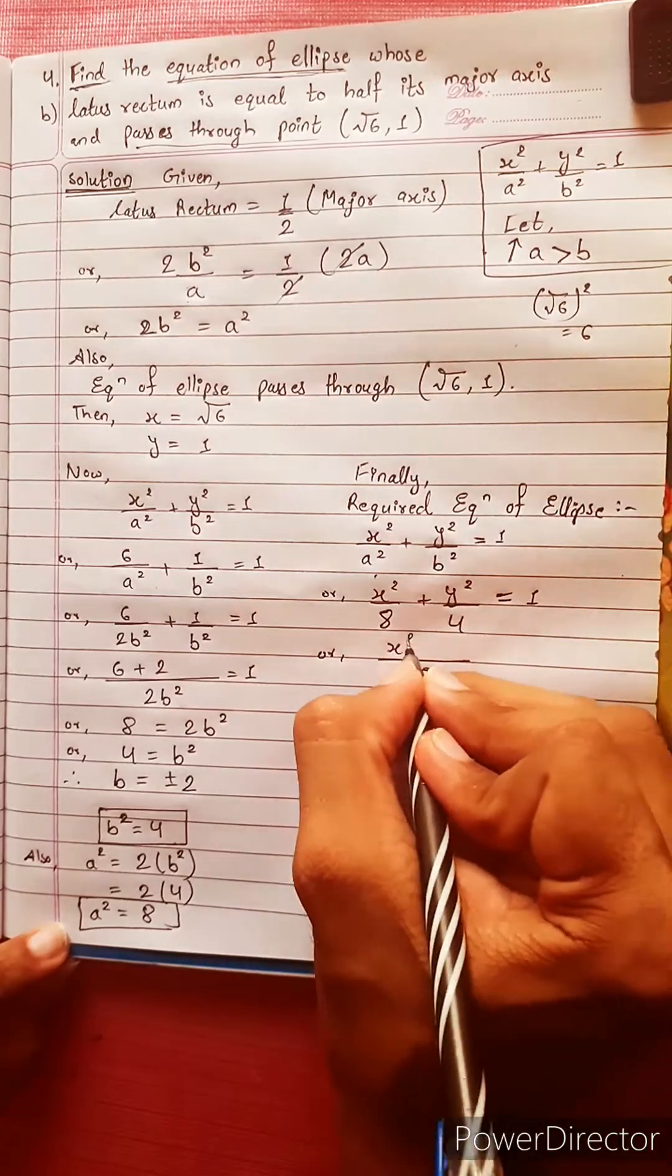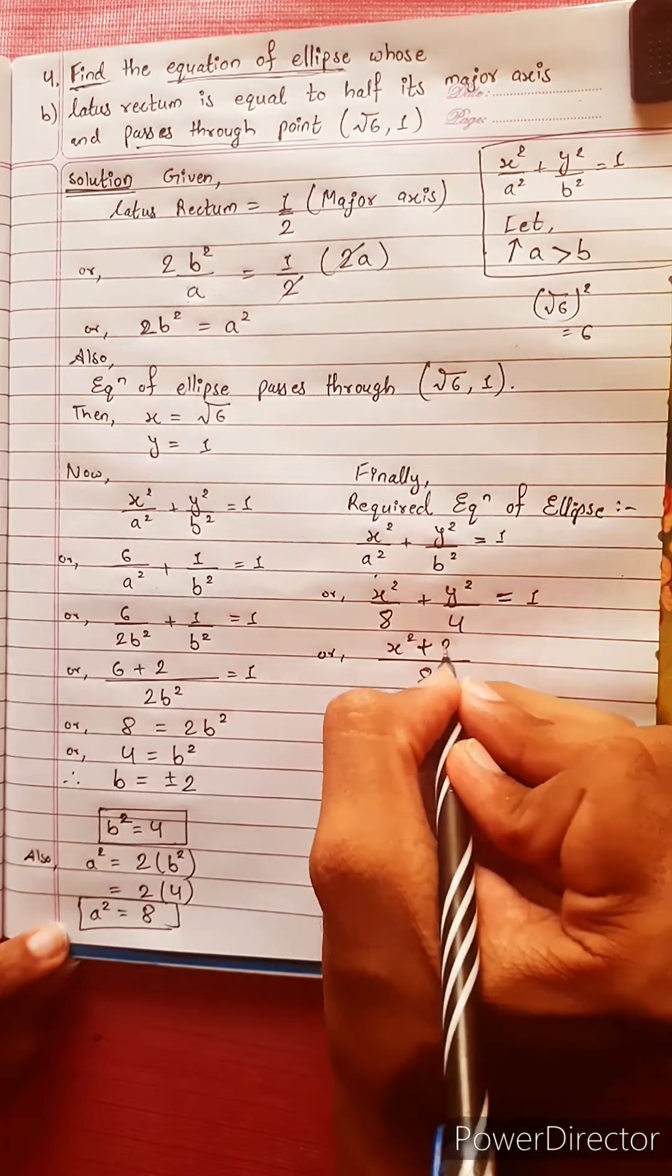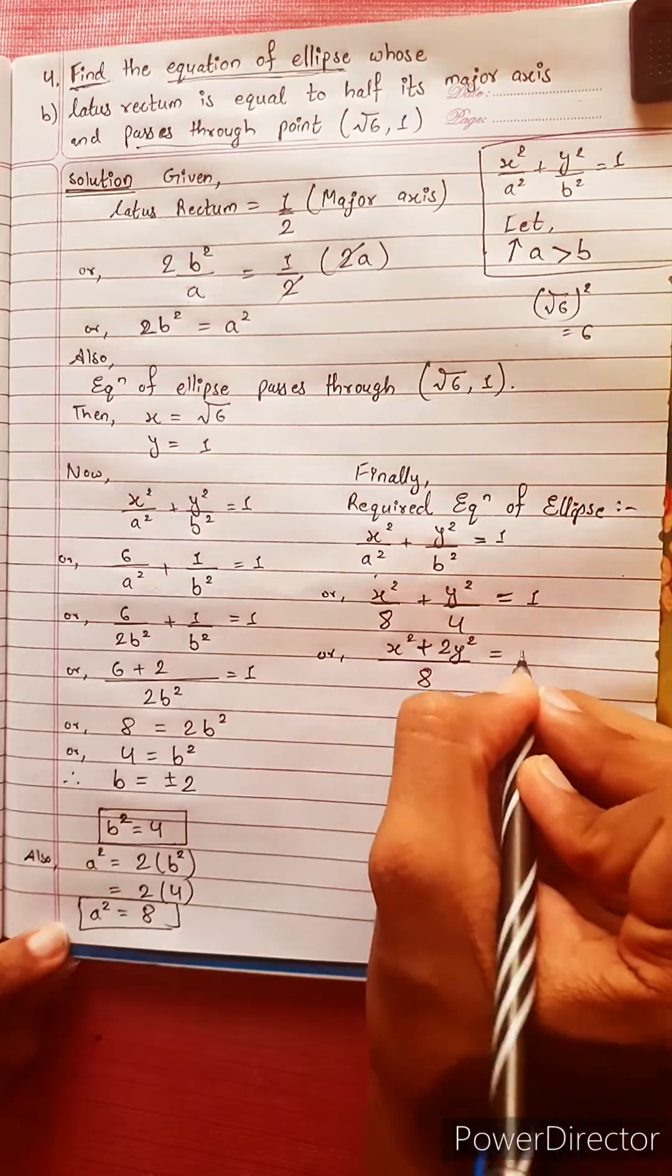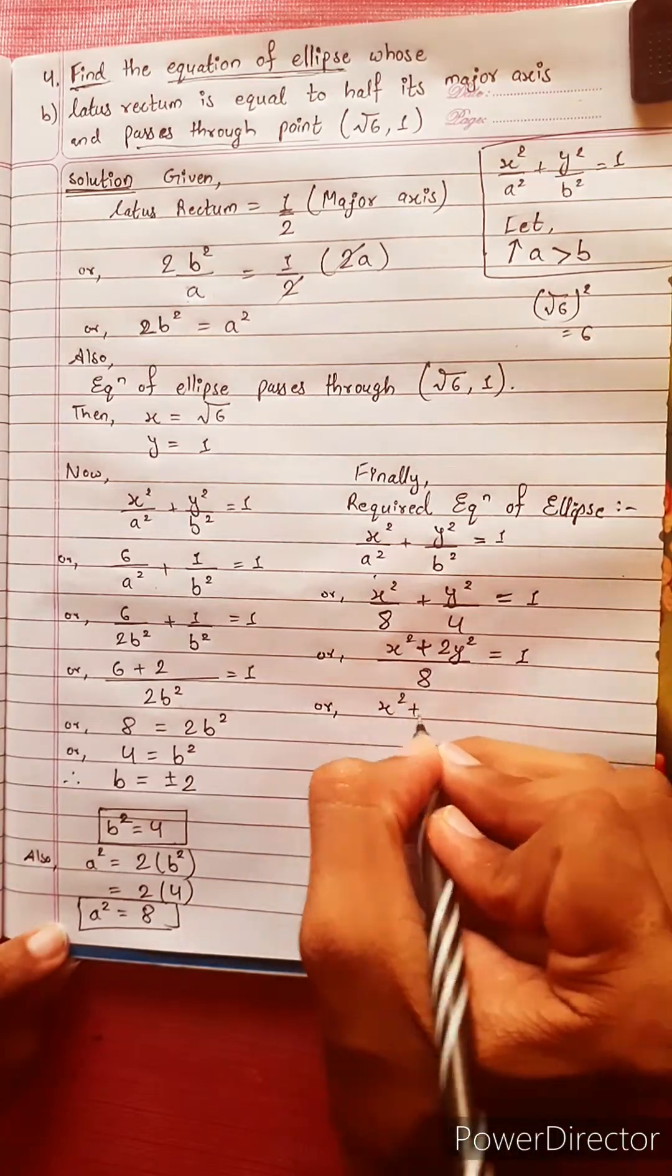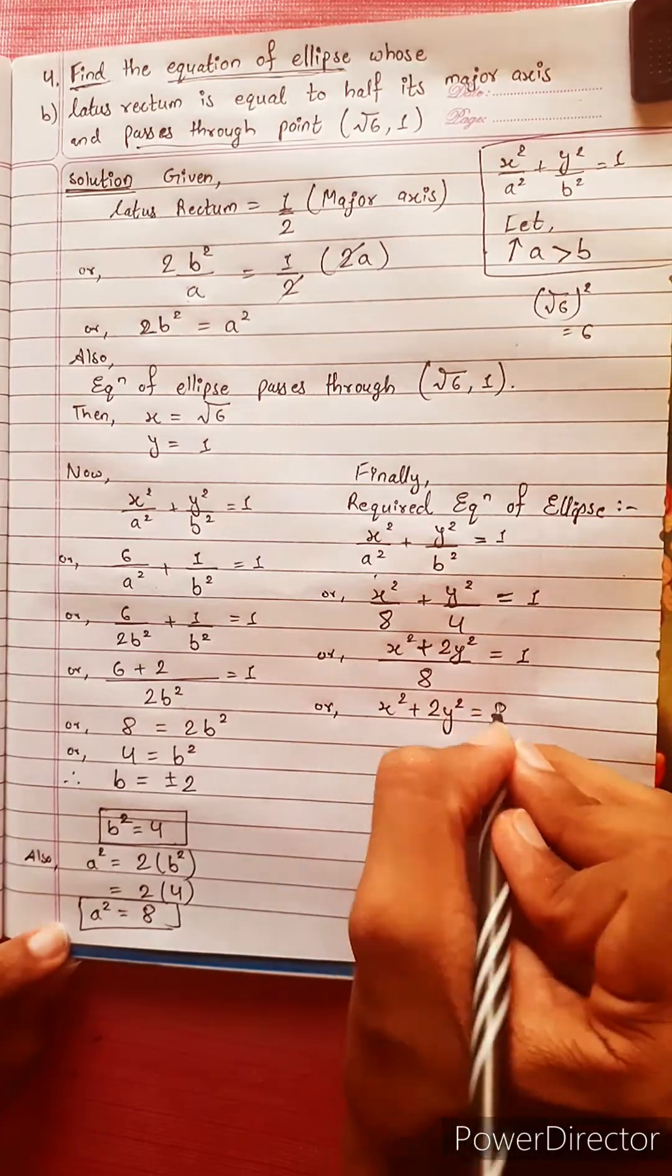Common LCM is 8. x² plus 2y² equals to 8. Or, x² plus 2y² equals to 8.